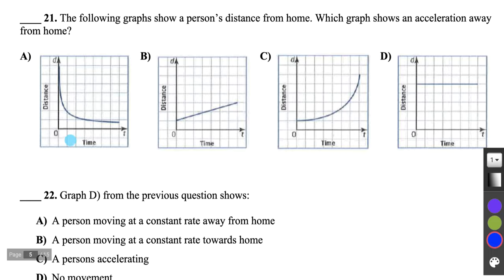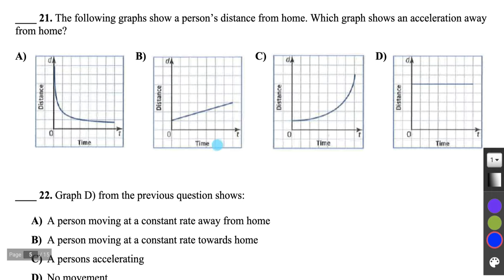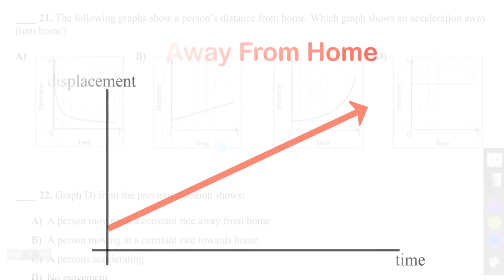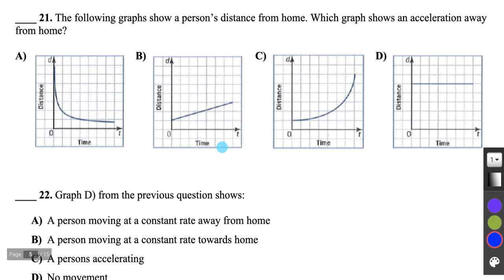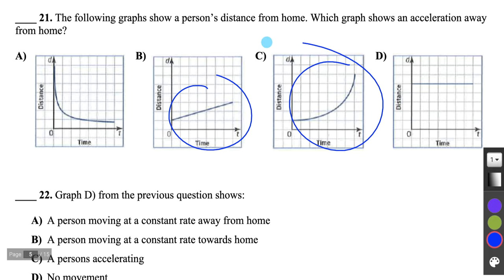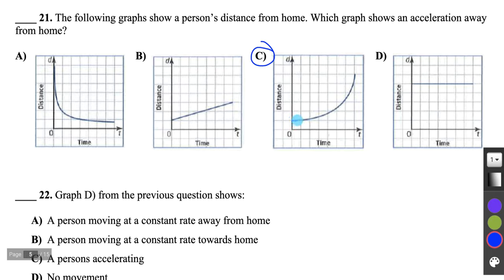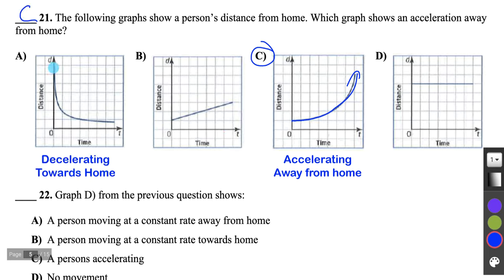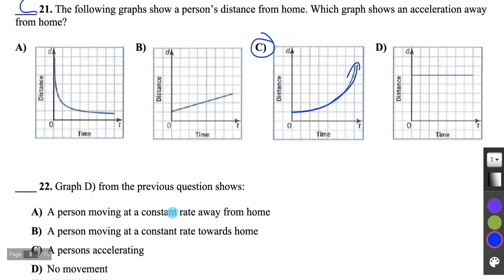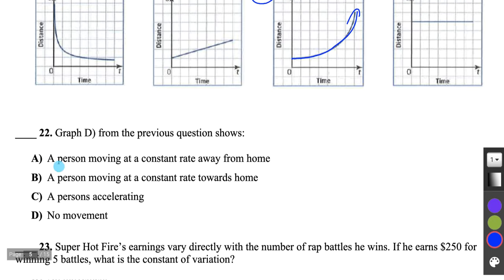Question 21: Which graph shows acceleration away from home? Away from home means the graph goes up to the right. That narrows it to two graphs. Acceleration means the slope is getting steeper as we move right. Graph C starts with a shallow slope that keeps getting steeper — moving away at an accelerating rate. Graph A shows moving towards home at a decelerating rate. Graph B shows moving away at a constant rate. Graph D shows no movement since the distance isn't changing.